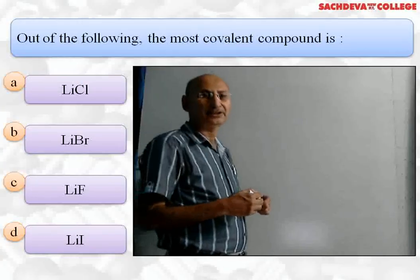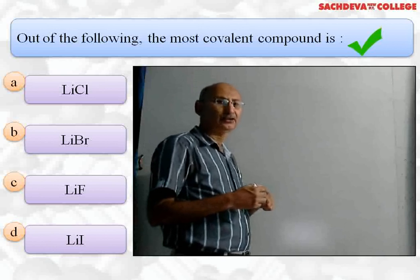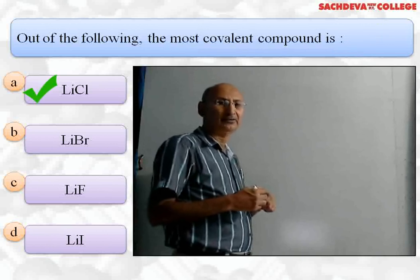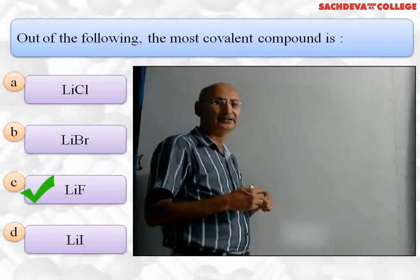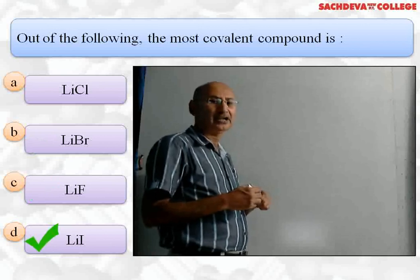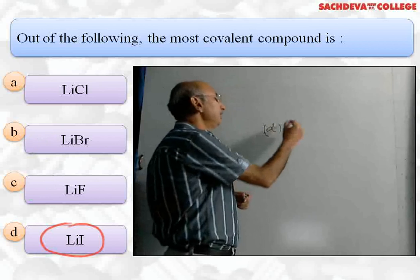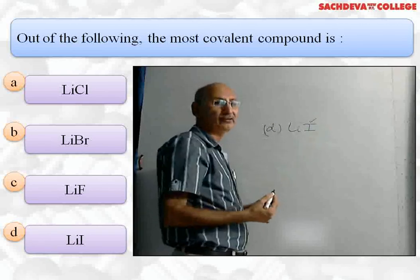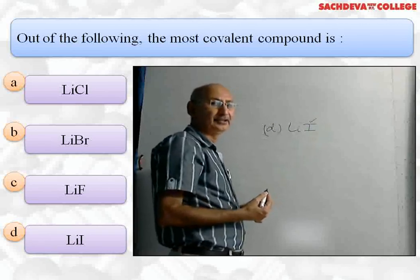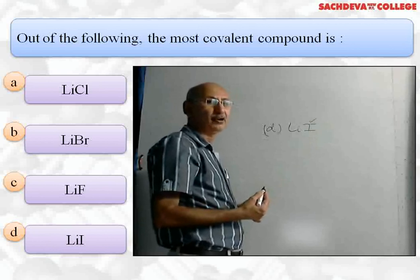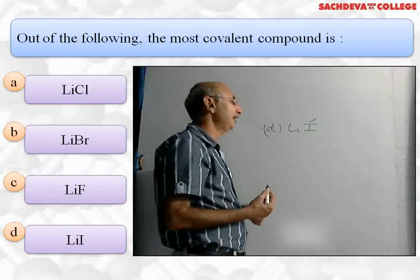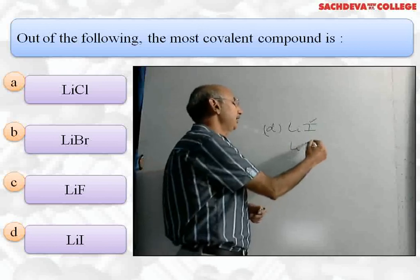Let's take a multiple choice question based on chemical bonding. The first question: out of the following, the most covalent compound is (a) lithium chloride, (b) lithium bromide, (c) lithium fluoride, and (d) lithium iodide. The correct answer is (d) lithium iodide, because iodine is least electronegative and largest in size, giving it maximum tendency to form a covalent bond. Lithium fluoride will be most ionic because fluorine is the most electronegative atom.